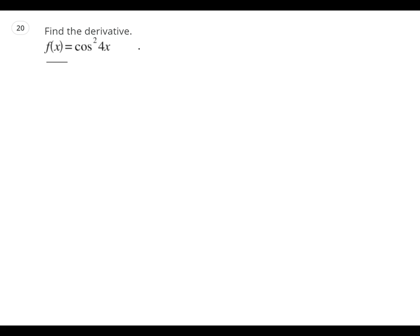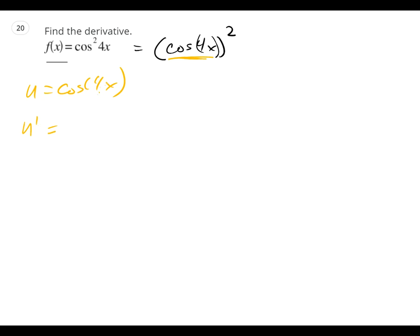It looks very deceiving, right? We need to recognize the double chain rule here. So the first outer function is the square. The inside function is u equals cosine of 4x. The problem is when I go to take the derivative, I have another inside function. So I'll write w equals 4x, so w prime equals 4.